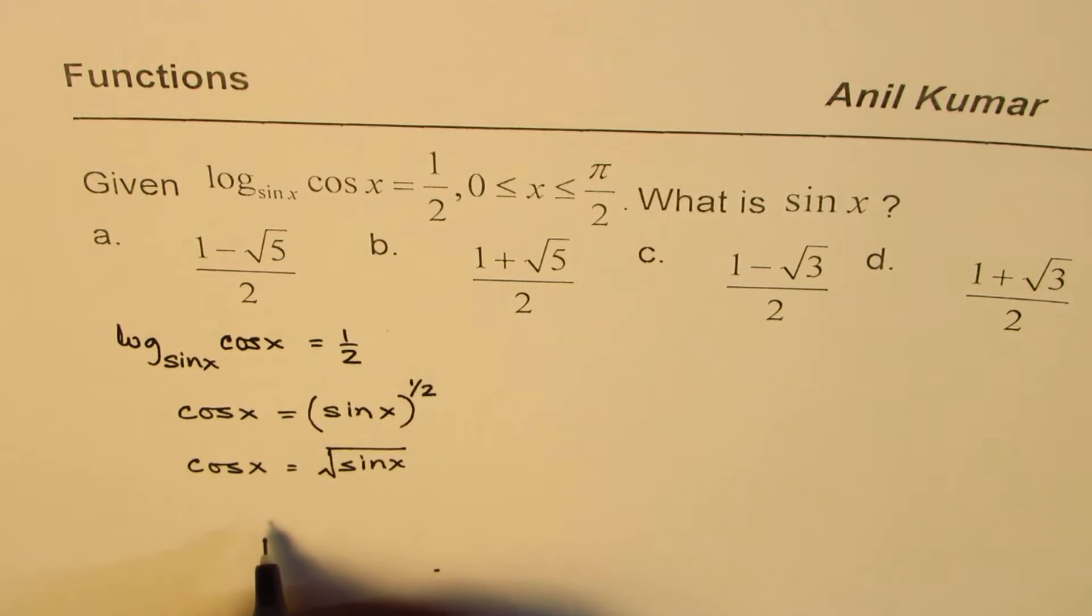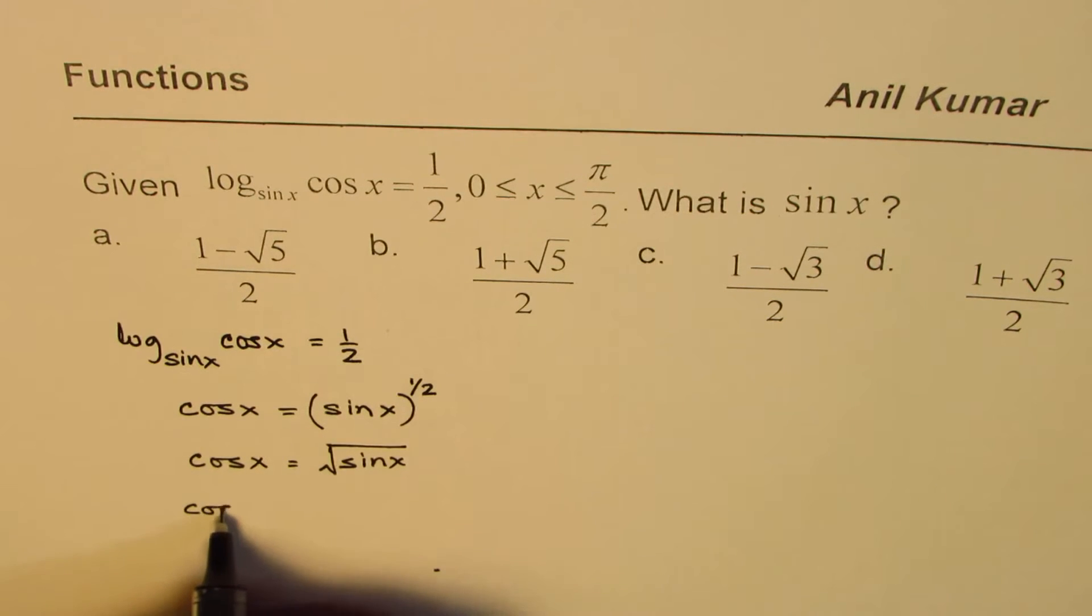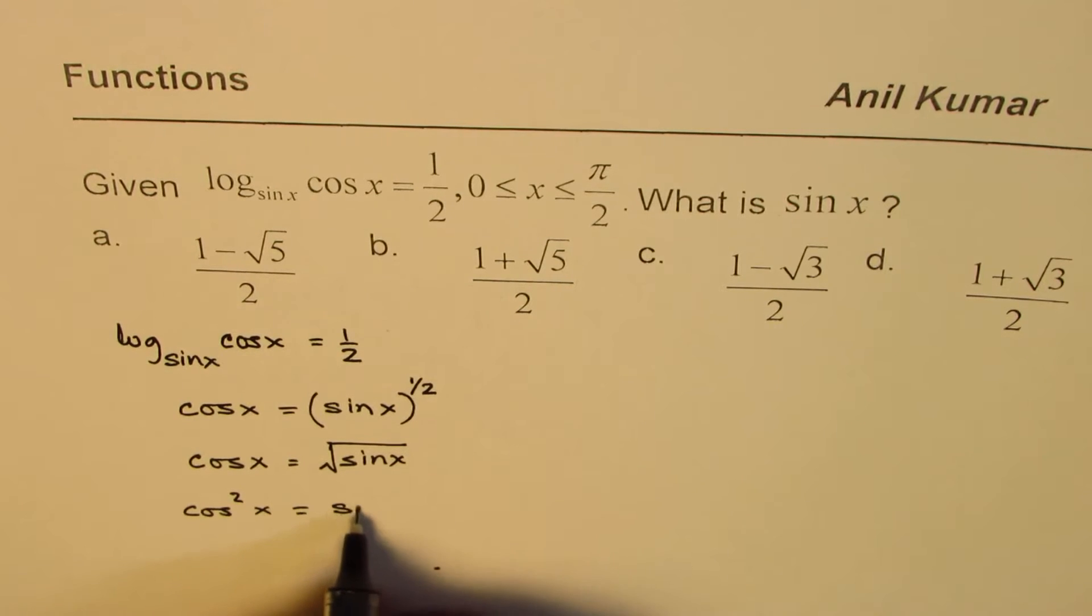Now to solve it further, what we can do is square both sides. So cos squared x equals sine x.